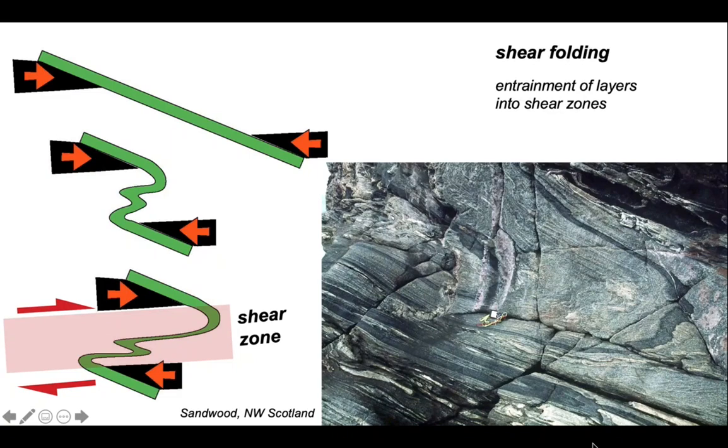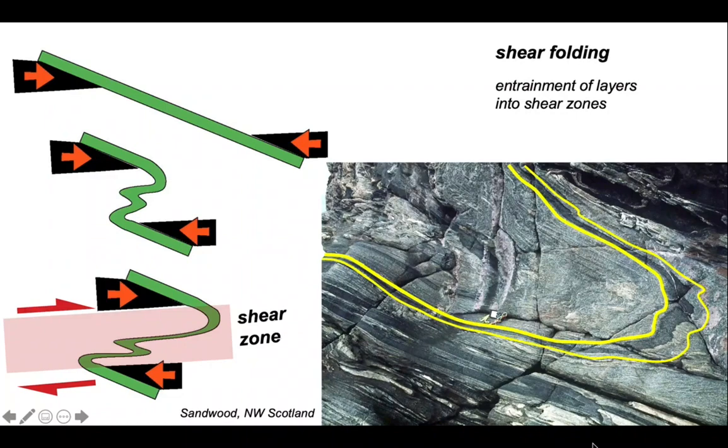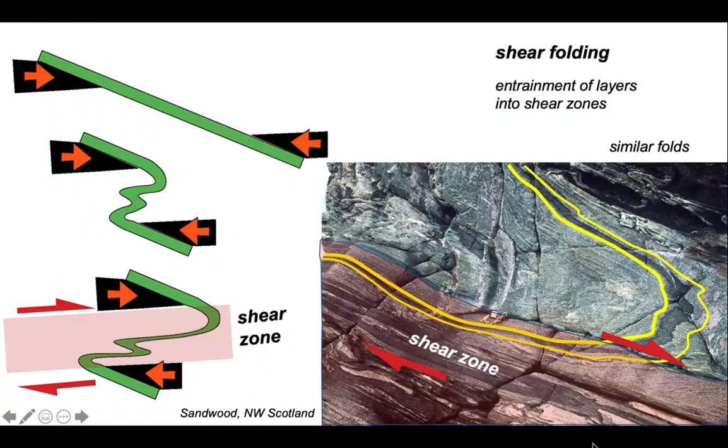We can see a natural example in the photograph. We trace the layering around. It's deflected into a shear zone with this sense of displacement, folding as a consequence of shearing entrainment into the shear zone. The geometry of these structures are characterized by the formation of similar folds.